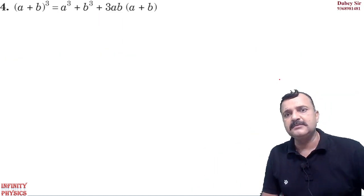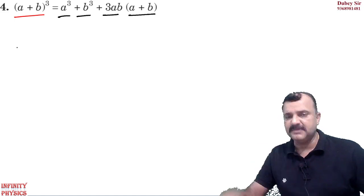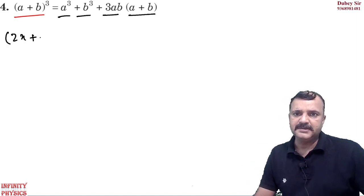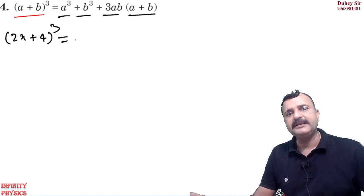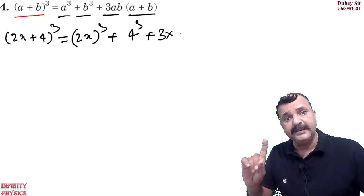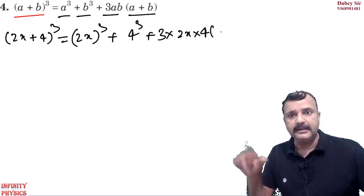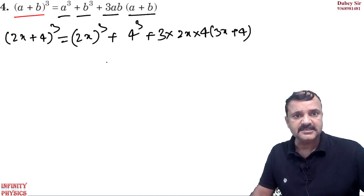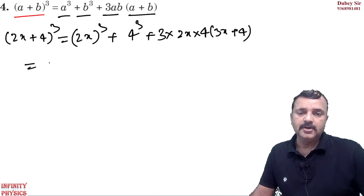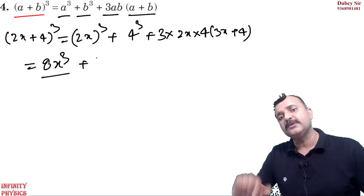Similarly, another formula: (a + b) whole cube is equal to a cube plus b cube plus 3ab(a + b). For example, (2x + 4) whole cube — a cube means (2x) whole cube, plus b cube means 4 cube, plus 3 into 2x into 4 into (2x + 4).